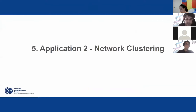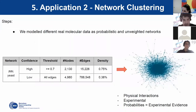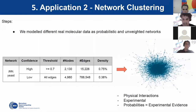The second application is network clustering. We modeled different real molecular data as probabilistic and unweighted networks — for this presentation focusing on protein-protein interactions from STRING. We used two different confidence thresholds: high confidence at 0.7 as recommended by the STRING database, and a low confidence threshold that keeps everything. We modeled only physical interactions that were experimentally validated, and the probabilities represent the experimental evidence.